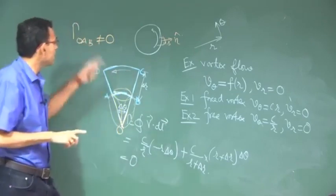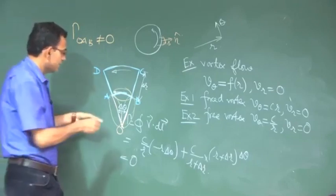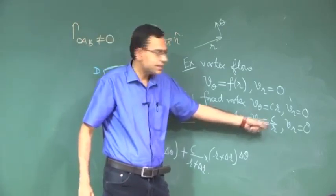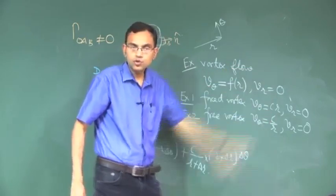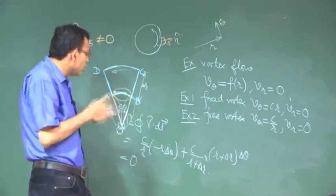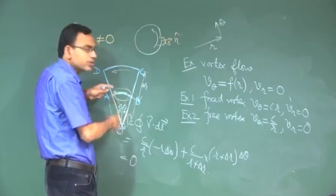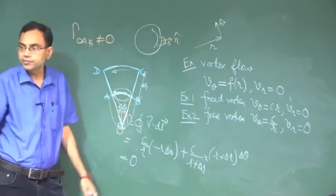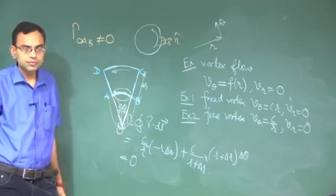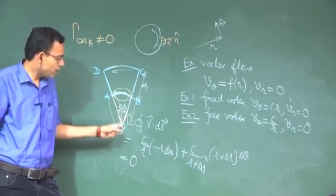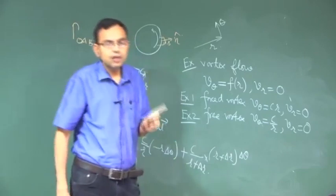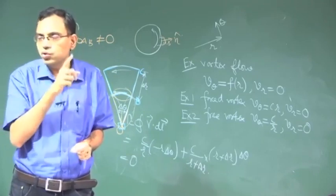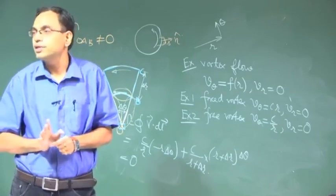There is a technical flaw in calculating this circulation. The technical flaw is that the point O is a point of singularity — since v theta equals C/r, as r tends to zero, v theta tends to infinity. The rule is that you can consider any contour in the domain except for a contour that contains or includes the point of singularity, as that will spoil the entire integration. The moral of the story is that to calculate circulation you can choose any arbitrarily closed contour, provided that the contour does not include the point of singularity.